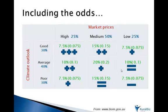Now, if we think about the probabilities of each event happening, historical figures might show that the probability of high prices is 25% of the years, medium prices as 50%, and low prices as 25%. Similarly, if we think about the historical figures for the climate in our district, we might see that we get a good season 30% of the time, an average season 40% of the time, and the remaining years are poor at 30%.